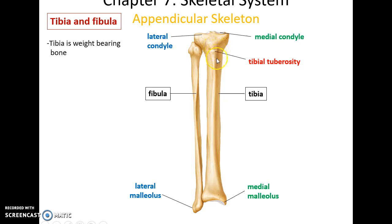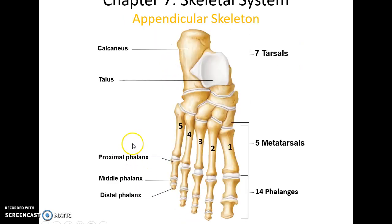The tibia has lateral and medial condyles, the tibial tuberosity attached to the patellar ligament, and at the distal end a medial malleolus. The fibula, which is lateral, has a lateral malleolus. Then you have the seven tarsals of the ankle, the five metatarsals of the foot, and 14 phalanges with only two in the great toe.